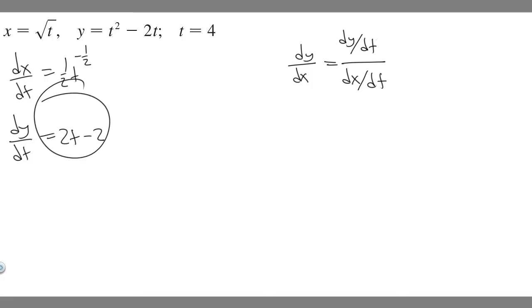Now we can plug it in. dy/dx equals dy/dt, which is 2t minus 2, over dx/dt, which is 1/2 t to the minus 1/2. I'm going to rewrite this: t to the minus 1/2 can be rewritten as 1 over 2 times the square root of t. So this is dy/dx. Now we want to evaluate this at our point.